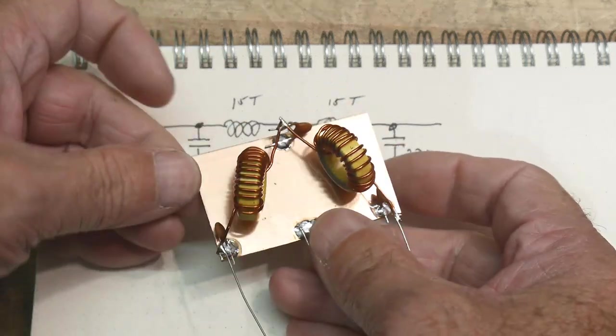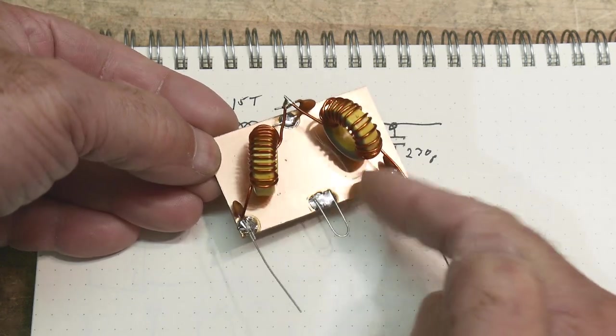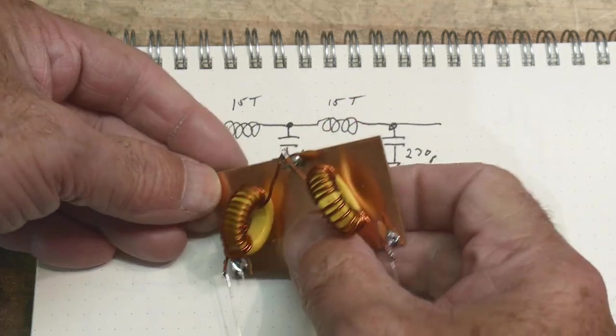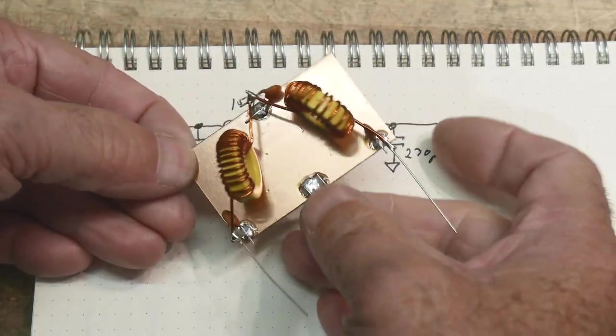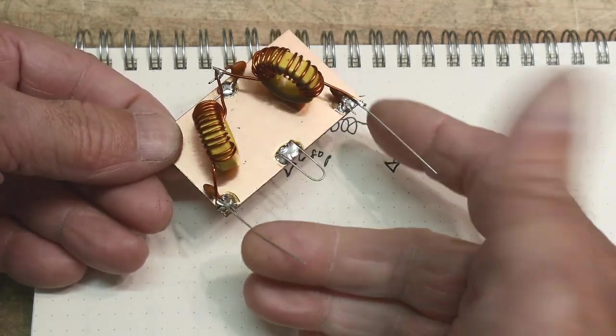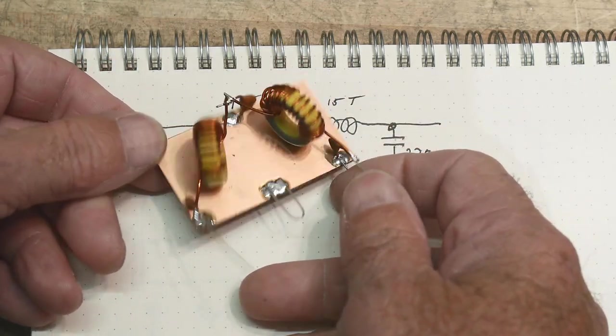So it's got here's the input capacitor, the L, the C, the L, the C. This is the 680 and these are the two 270s. It's on a board here and just wired up. There's a little loop here so I can connect grounds. And so we're going to put this on our analyzer. We'll sweep the filter and see what kind of performance we get out of it.